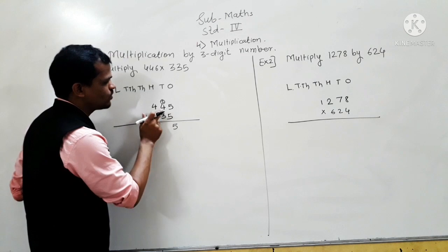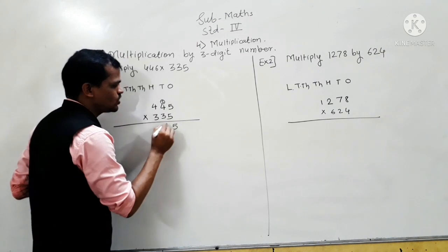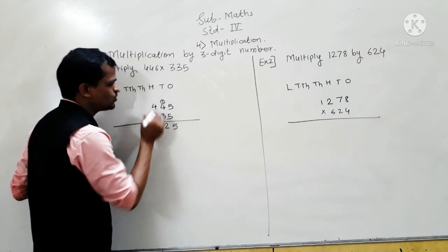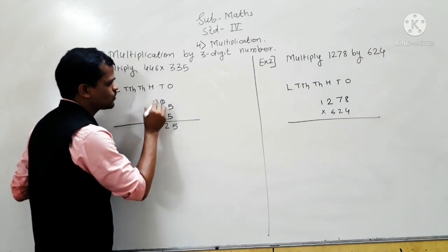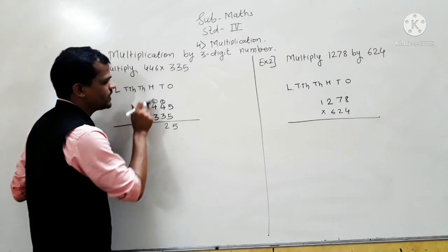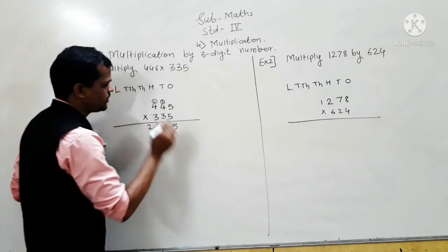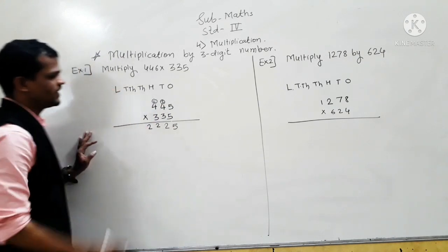Now, 5 fours are 20, 20 plus 2 is 22 — write 2 here and carry 2. Then 5 fours are 20, 20 plus 2 is 22.